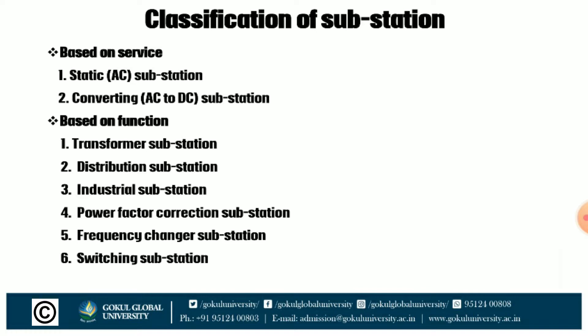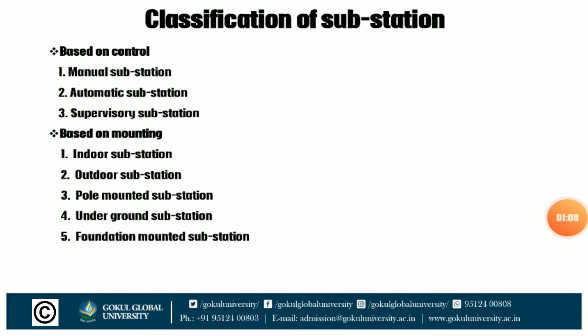Second classification is based on the function. There are mainly six types of substations defined based on function. First one is the transformer substation, second one is the distribution substation, third one is the industrial substation, fourth one is the power factor correction substation, fifth one is the frequency changer substation, and sixth one is the switching substation.